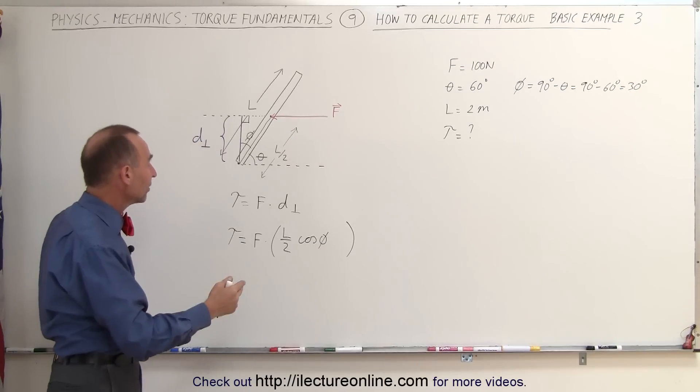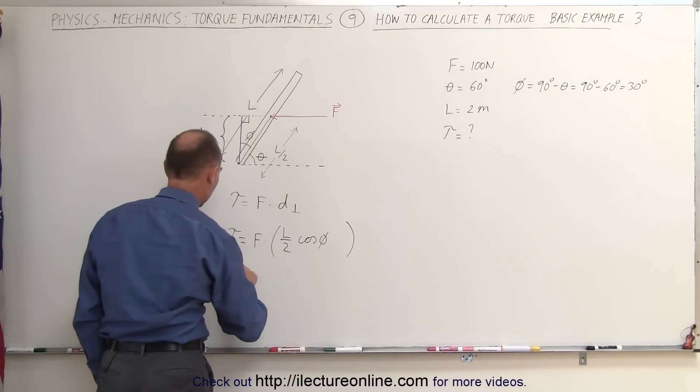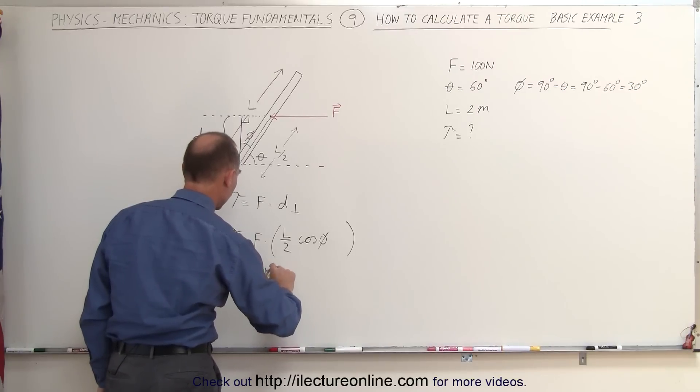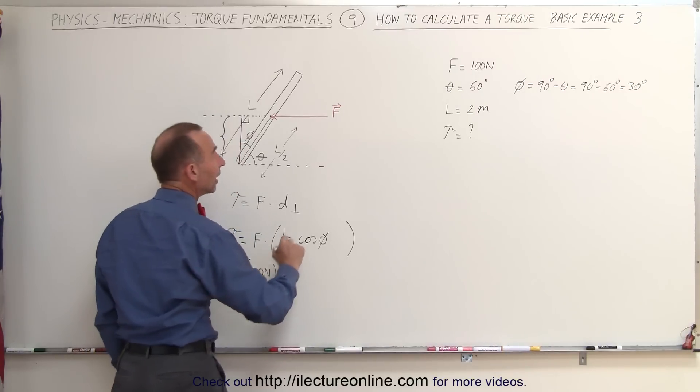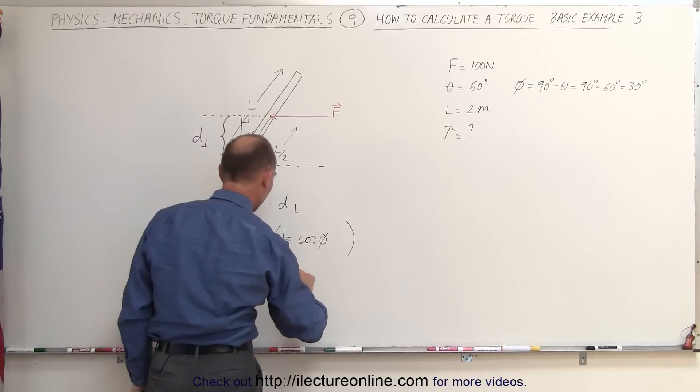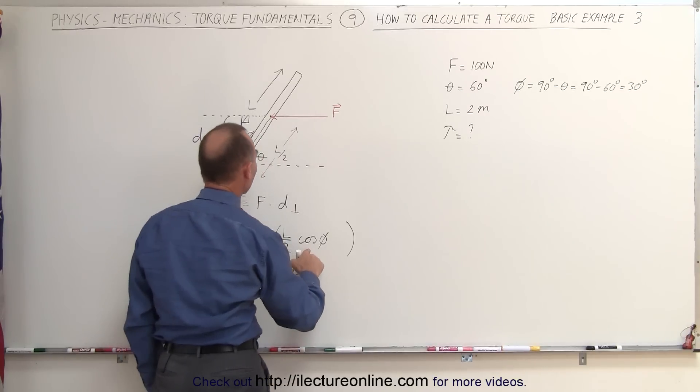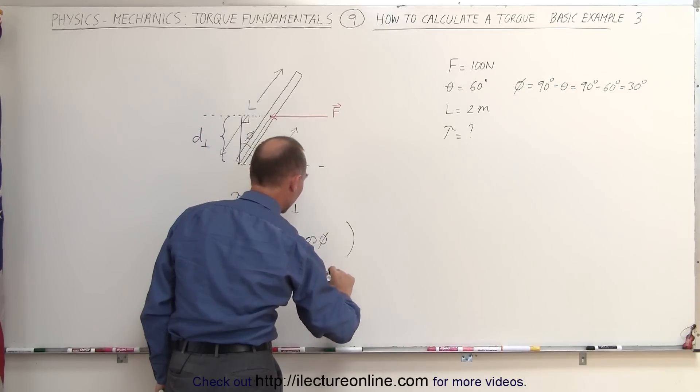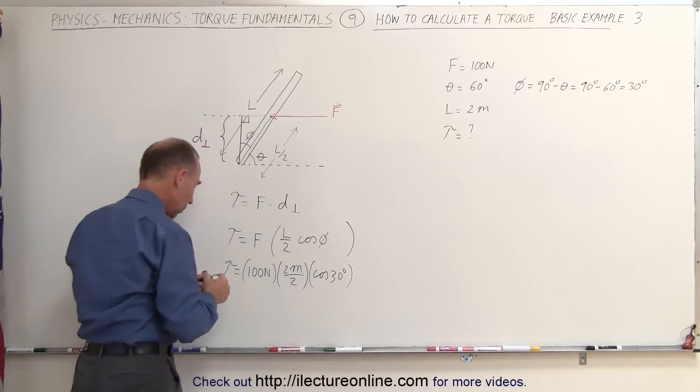The torque is equal to the force, which is 100 newtons, times half the length. The length is 2 meters. We divide that by 2. And then we have to multiply times the cosine of phi, which is 30 degrees. The cosine of 30 degrees.